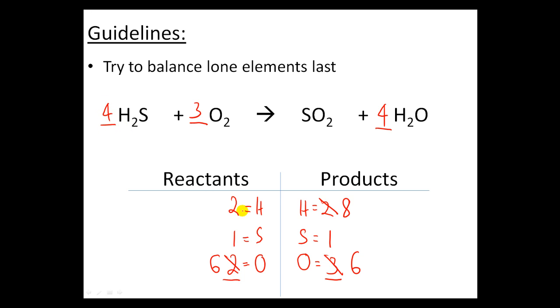Now my hydrogens are balanced but then I messed up my sulfurs. 4 times 1 equals 4 sulfurs. And now we've got to jump back on this side. In order to make this into 4 sulfurs I'm going to put a 4 in the front. So it becomes 4 sulfurs.